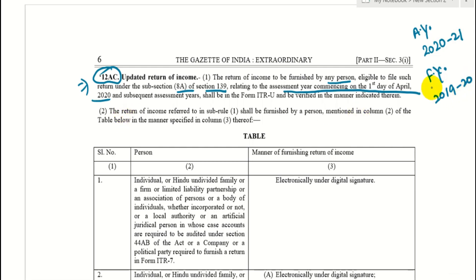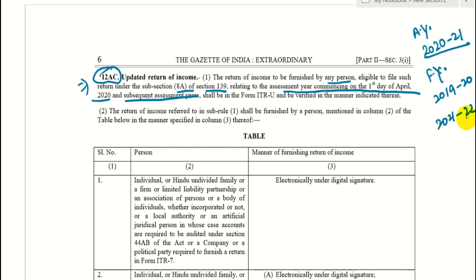The rule has told us this. After AY 2020-21, the next applicable assessment year is 2021-22. So for these two years, you will have the option to file an updated return.